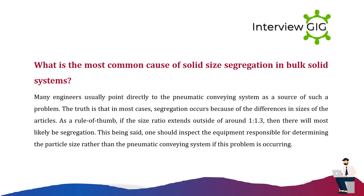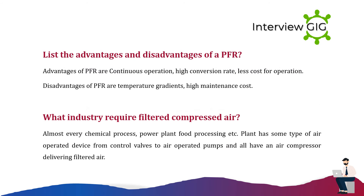What is the most common cause of solid size segregation in bulk solid systems? Many engineers point directly to the pneumatic conveying system, but in most cases segregation occurs because of differences in particle sizes. As a rule of thumb, if the size ratio extends outside of around 1:1.3, there will most likely be segregation. Therefore, one should inspect the equipment responsible for determining particle size rather than the pneumatic conveying system.